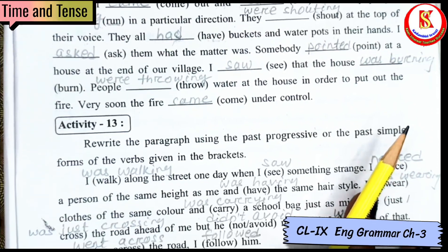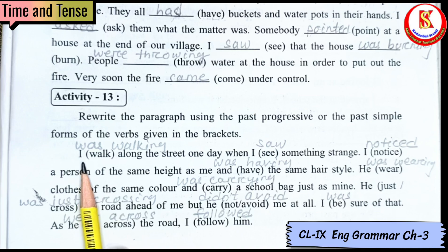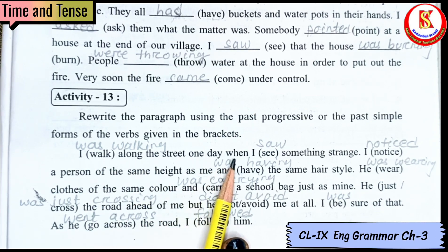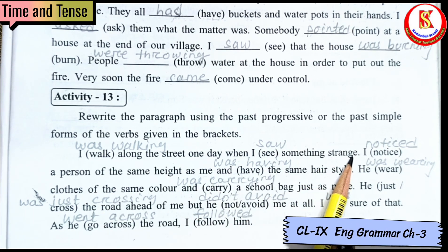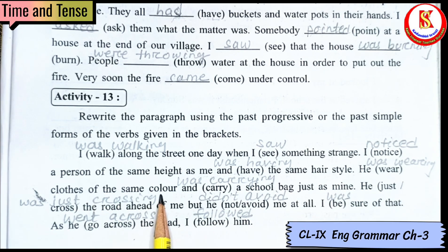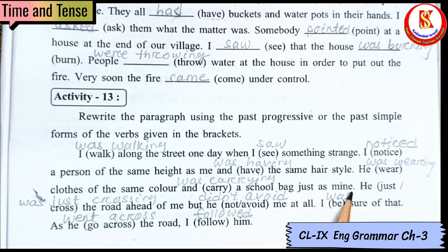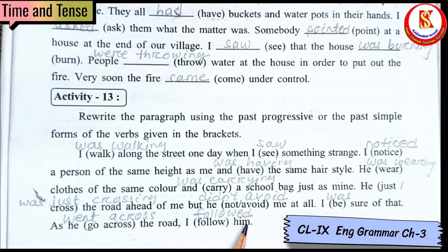Activity 13 is the same as Activity 12 — use past progressive or past simple. 'I was walking along the street one day when I saw something strange.' — walking is ongoing, so past progressive; saw is simple. 'I noticed a person of the same height as me, having the same hairstyle. He was wearing clothes of the same color and was carrying a school bag just like mine. He was just crossing the road ahead of me, but he did not avoid me at all. I was sure of that. As he went across the road, I followed him.'